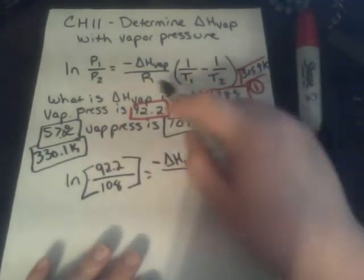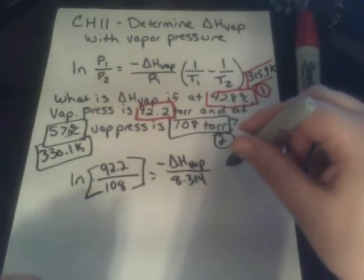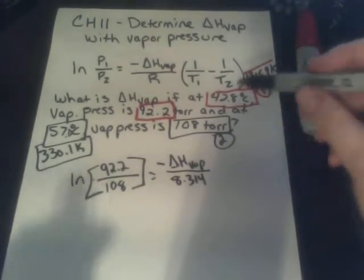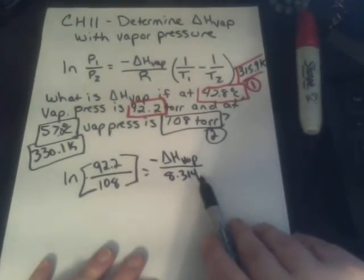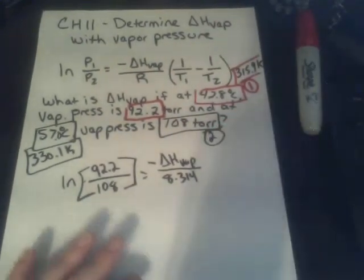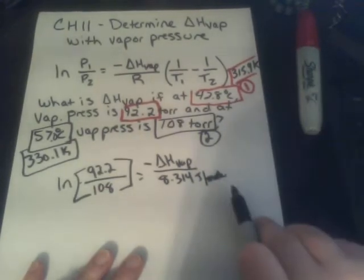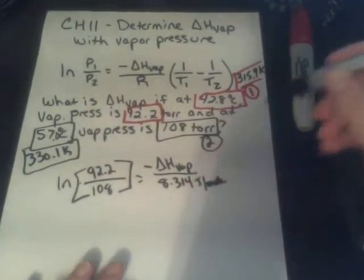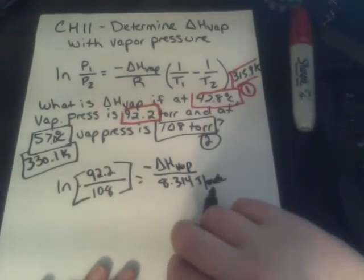divided by R. Now, what is R? R is 8.314, and its unit is joules per K mole, or joules per mole K. So, since it's going to be in joules, our answer is going to be in joules. But you notice that it's joules per mole K. So we have to have this in Kelvin. So that's why these have to be in Kelvin.